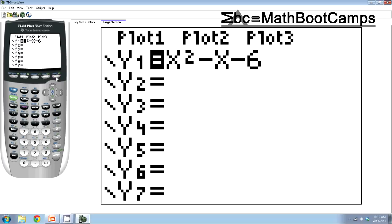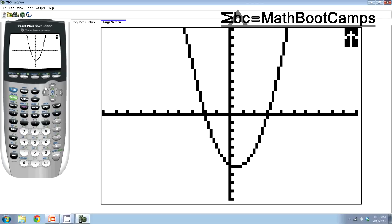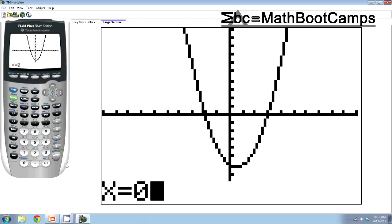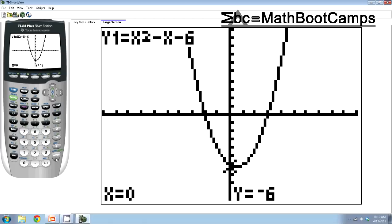Well, I can actually go back. Well, let's look at the graph real quick. I can go back to second and trace and go into the calculate menu. And you see here where it says value. I'm going to press one and go into that. And it says x equals, well, I want x equal to zero. And there is your point. Y equals negative six.